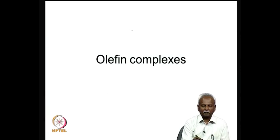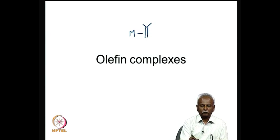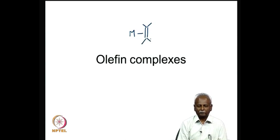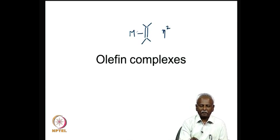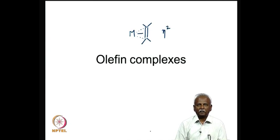Today we will discuss metal olefin complexes. For the first time in this series, we are going to look at compounds where the metal is bonded to 2 carbon atoms simultaneously. In organometallic terms, one often indicates the formation of an olefin complex by writing them as M coordinated to 2 carbons by drawing a line in between the 2 carbons. In the nomenclature, one indicates this as an eta-2 complex, meaning both carbon atoms are bonded in an almost similar fashion, so that both carbons are interacting with the metal simultaneously.